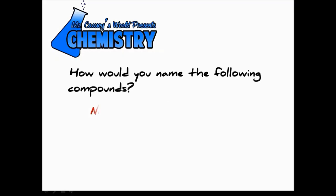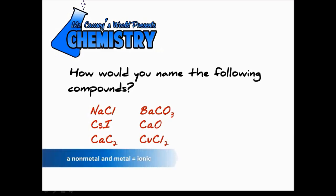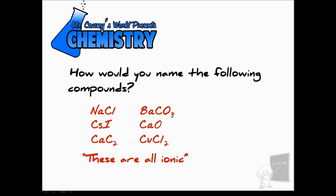How would you name the following compounds? We have six ionic compounds. Now I know they are ionic because it is a metal and a non-metal. So that makes them all ionic. And the thing we need to remember about ionic compounds is a metal and a non-metal.